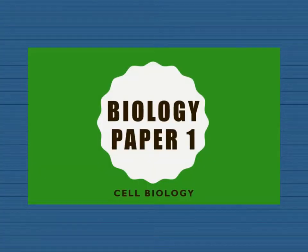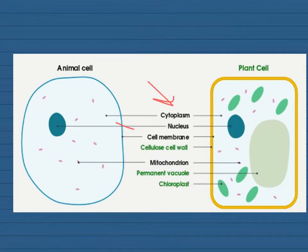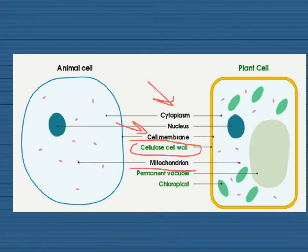Probably the easiest part of this section is looking at the structure and function of animal and plant cells. You will need to know the main structures, particularly things like the cytoplasm, nucleus, and cell membrane, but also know the differences between the two. A plant cell additionally has a cell wall, a permanent vacuole, and chloroplasts.